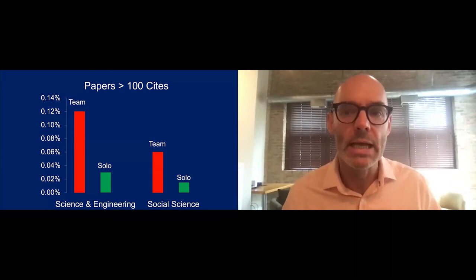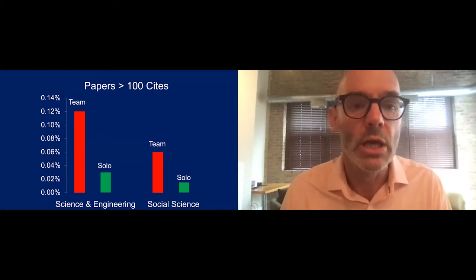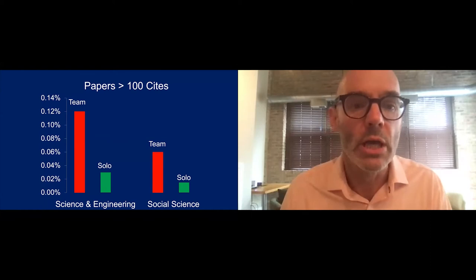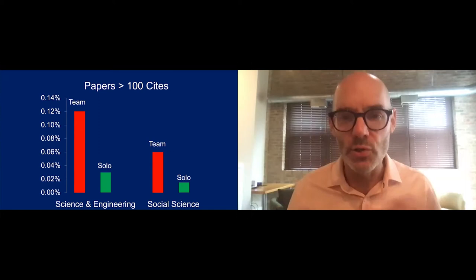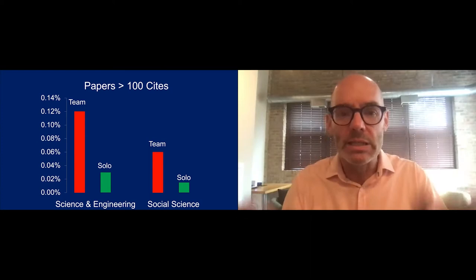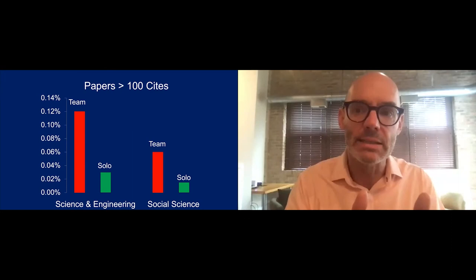If you look, whether in science and engineering or social science, and use 100 papers as a threshold, you find that team authored papers are four and a half times as likely to be above this threshold. Some of the solo authored papers are survey articles, so if you get rid of those, the numbers would be even worse. If you do a comparison, individuals versus teams at science, there's three answers: Teams win, teams win, teams win.